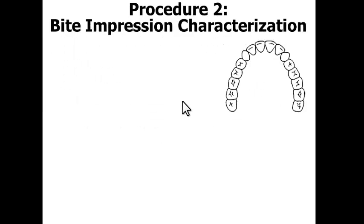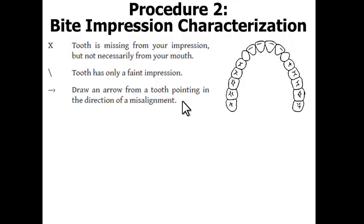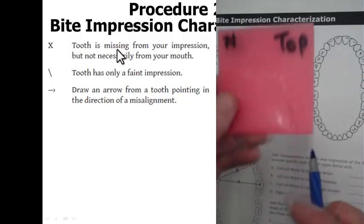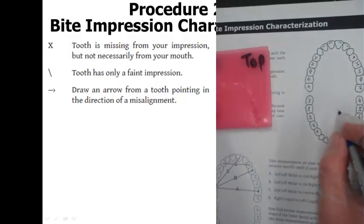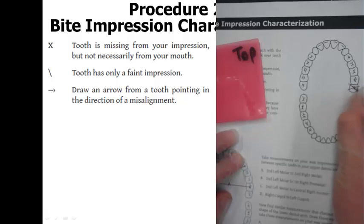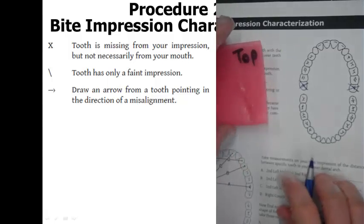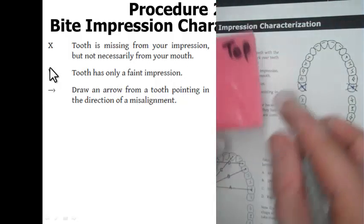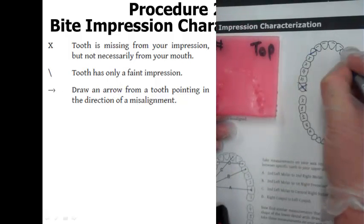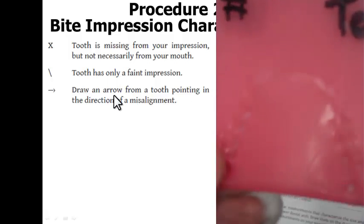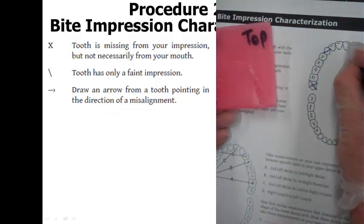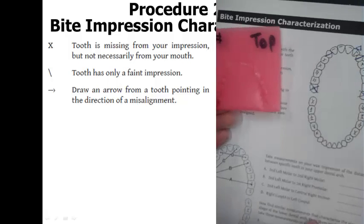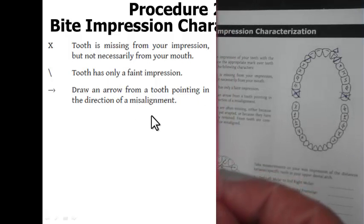Procedure 2. Now that you've made your bite mark impression, we are going to learn how to characterize our bite mark impressions. When you're looking at your bite mark impression, you can label each tooth with an X if that tooth is missing or didn't appear in the impression. For example, in my impression I wasn't able to get the bite plate far enough into my mouth to include my wisdom teeth, so I'm going to X out my rear molars. Sometimes teeth only have a faint impression, and you can use a specific symbol to describe if they are present but didn't leave a complete impression. You can also draw an arrow in the direction of a tooth that might be a little bit misaligned — if you have a snaggle tooth or subtle imperfection — as shown in the video.